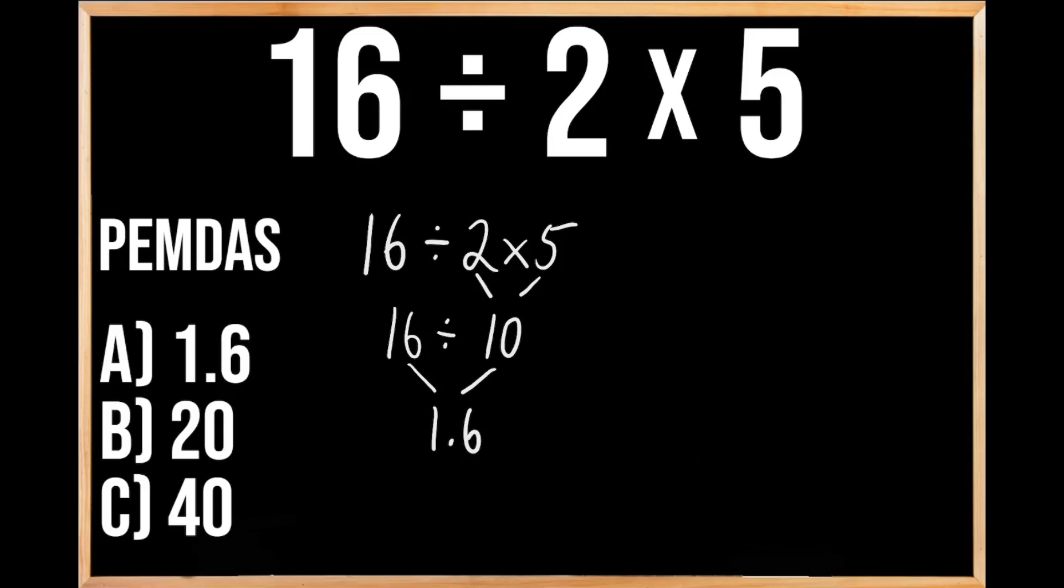So our answer here should be A, 1 and 6 tenths. But if we were to solve this problem in this way, then we would get the incorrect answer, because we didn't follow the order of operations here.